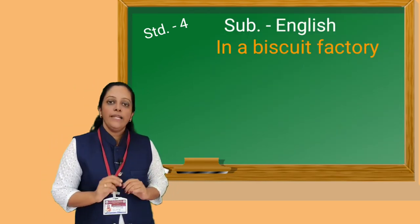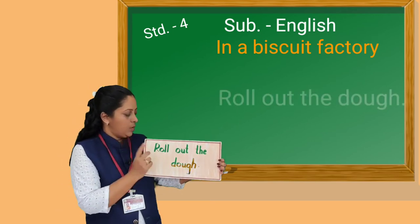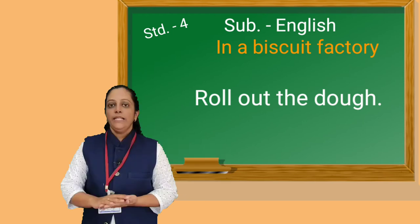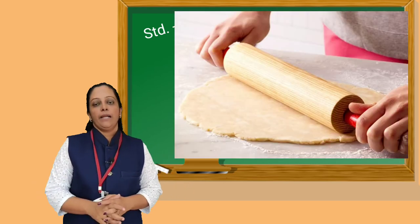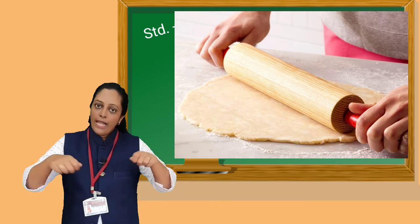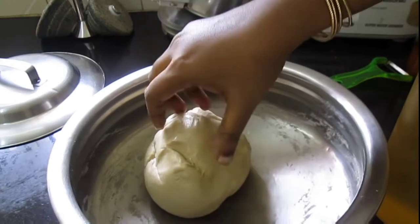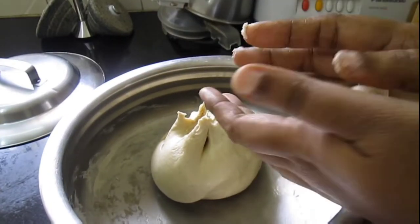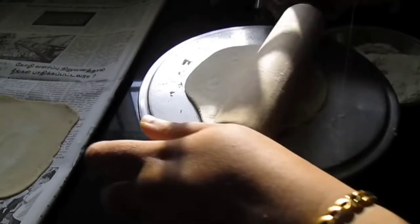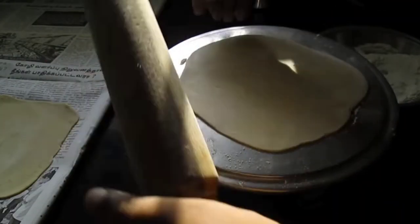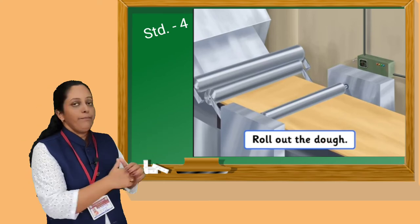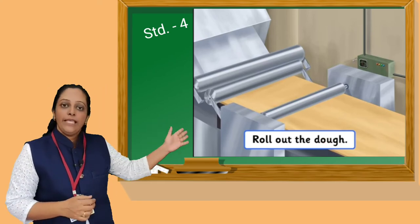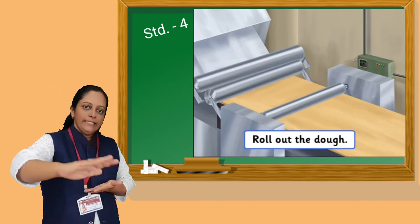And after kneading the dough, our next step is: Roll out the dough. Here we see a new word — roll out. Roll out means to become flatter or thinner by pressure with the rolling pin. At home, we see that mother kneads the dough very well, then she takes some part from the dough and makes a ball, and after making the ball, she flattens that ball with the help of a rolling pin. Like this, in the factory, there are big rolling pin machines, and with their help they flatten the dough and make it thinner.